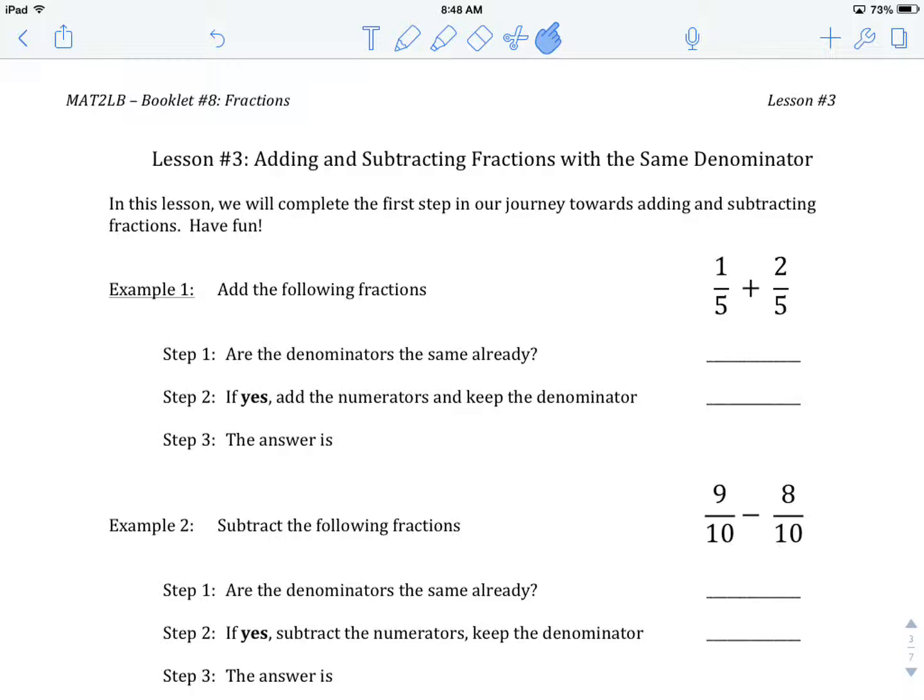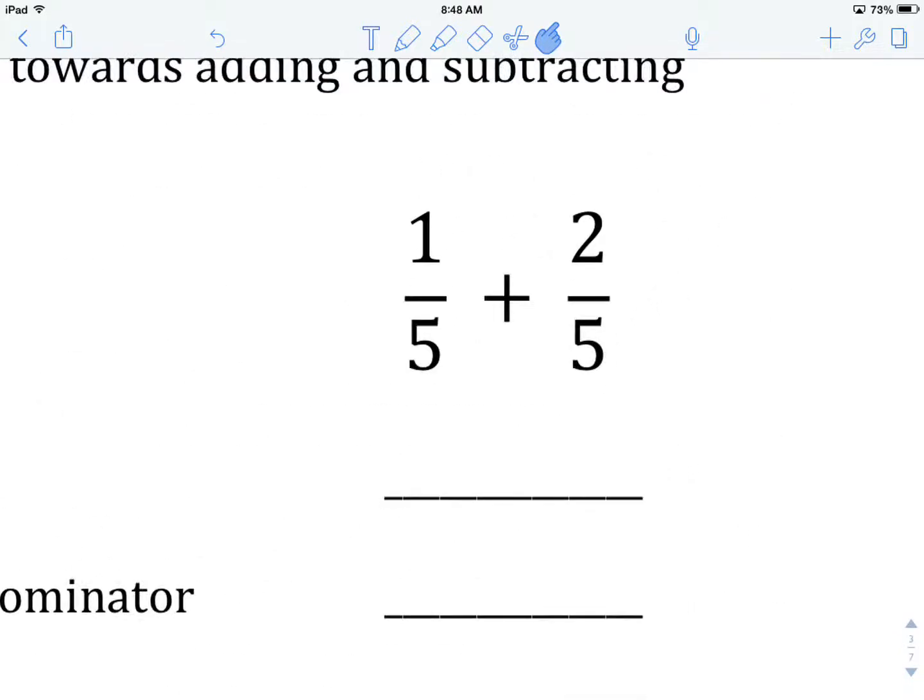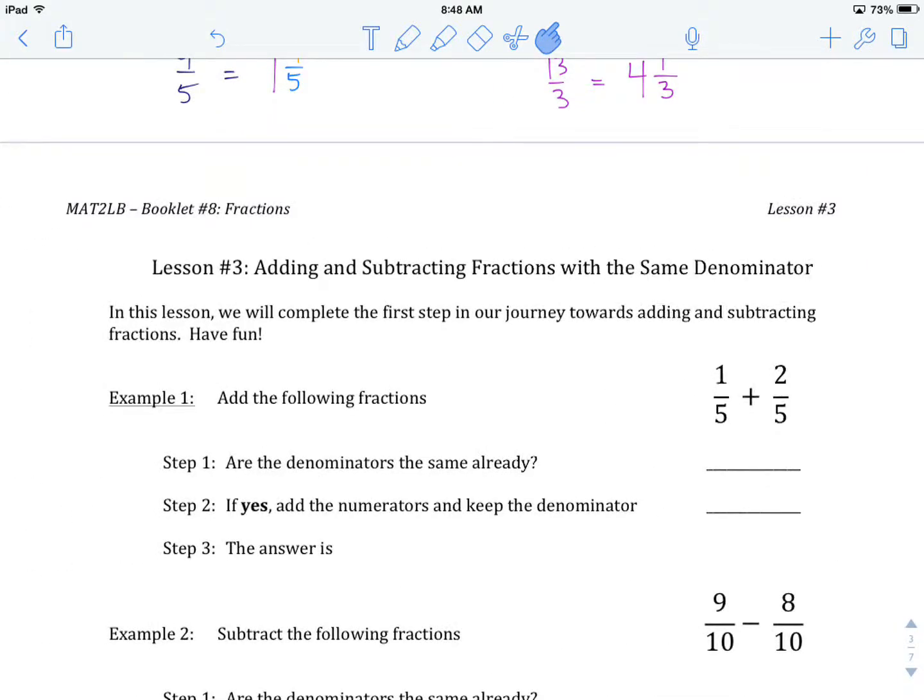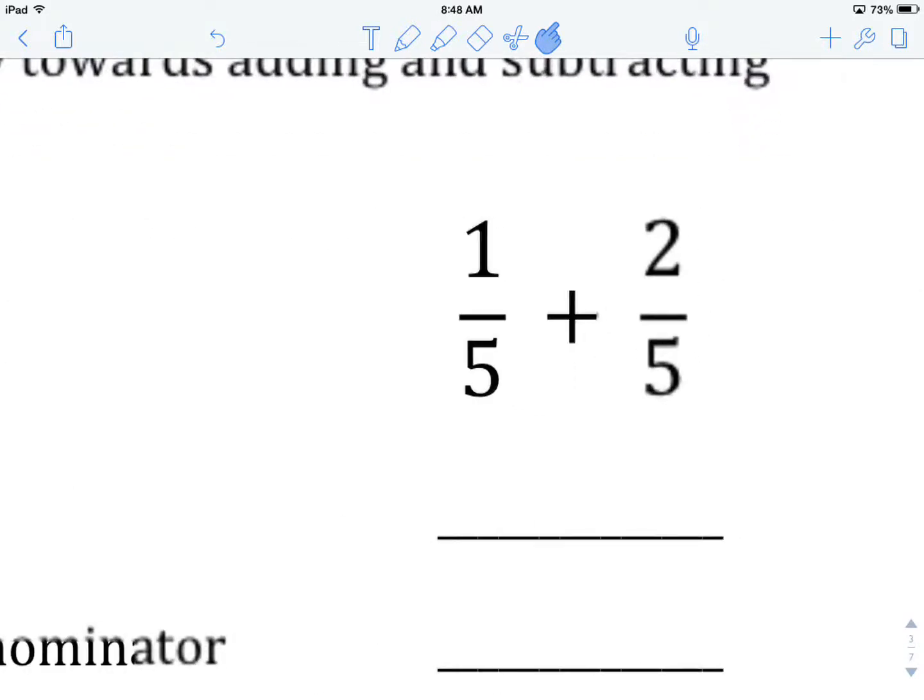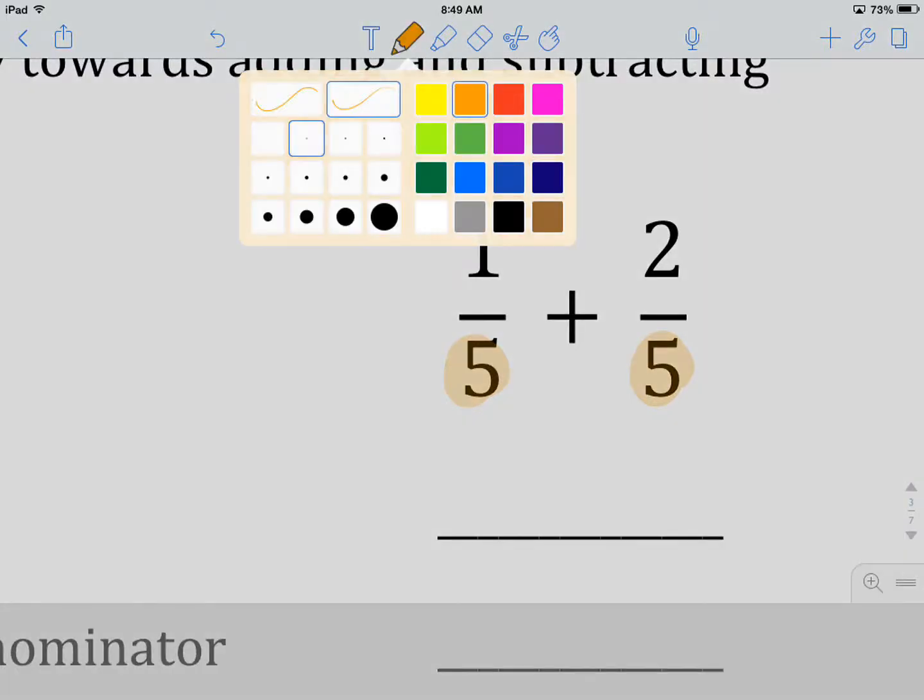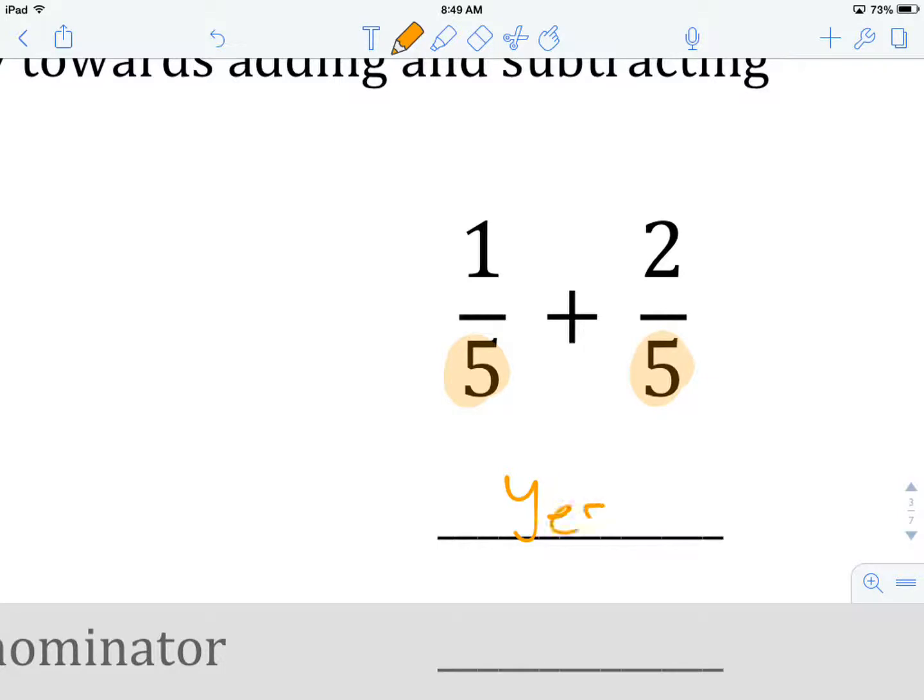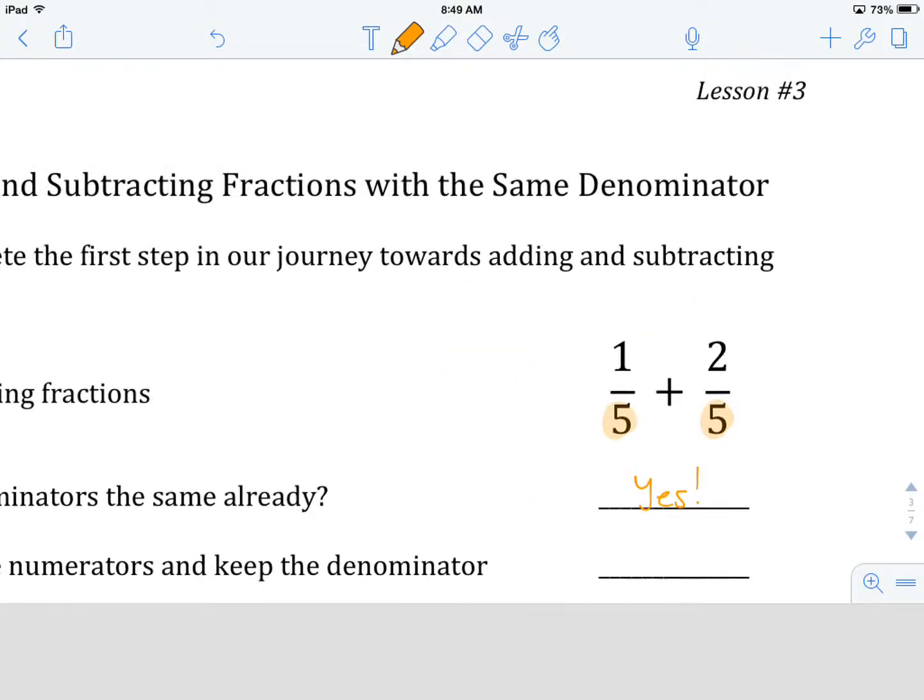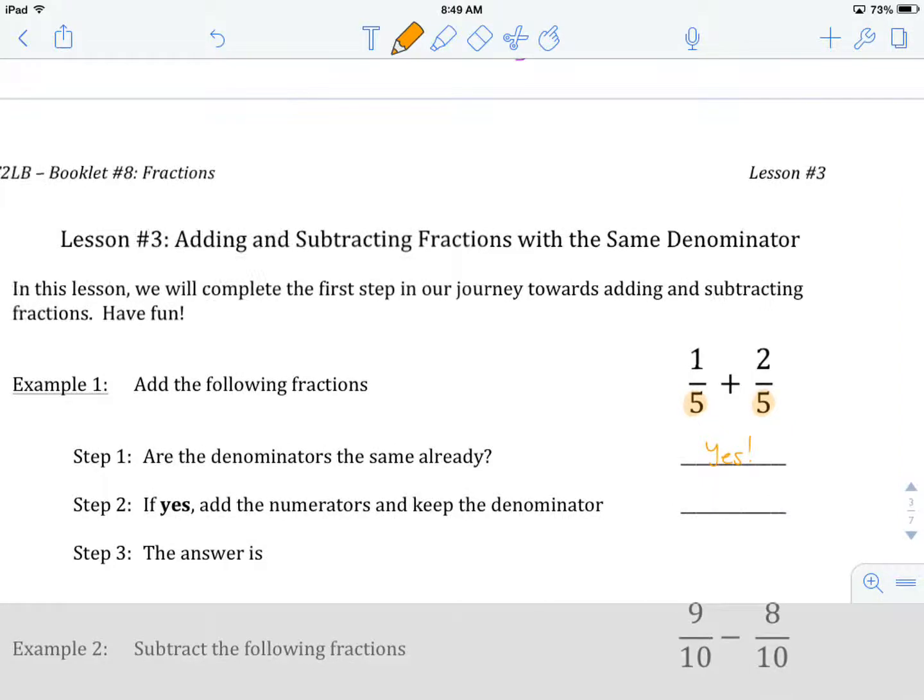When we add and subtract fractions, let's go to example number 1. When we look at two fractions being added, here's our first example, 1 over 5 plus 2 over 5. We're asked to add them. First thing you should be asking yourself is, are my denominators the same already? My denominators, that's the number at the bottom under the fraction bar. My denominators are, in fact, the same already. I'm going to put yes right there.